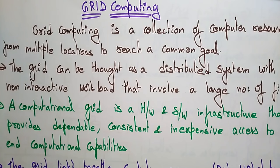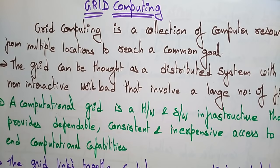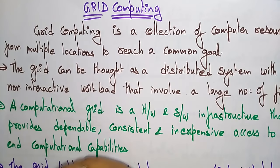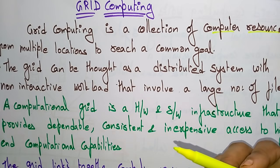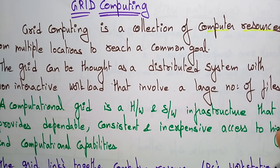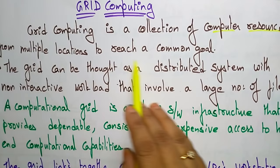Coming to the next topic in cloud computing: grid computing. Grid computing is a collection of computer resources — like processors, storage, data, and applications — from multiple locations to reach a common goal.